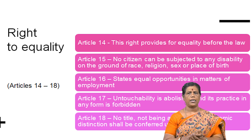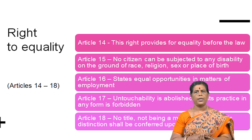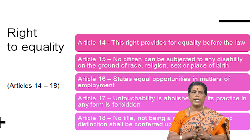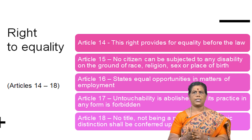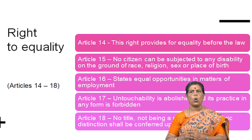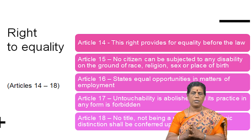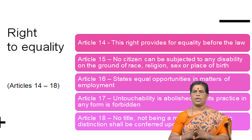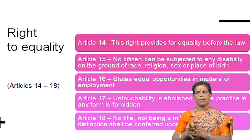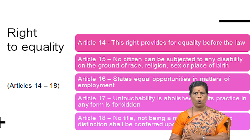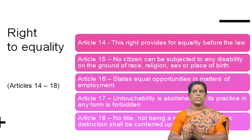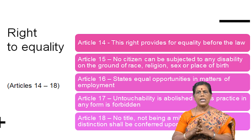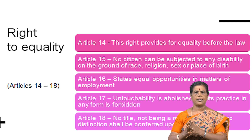The right to equality is guaranteed under Articles 14 to 18 in the Indian Constitution. Article 14 provides the right to equality before the law — we are all equal. Article 15 states that no citizen can be subjected to any disability on the grounds of race, religion, sex, or place of birth. That is, no discrimination on the grounds of race, religion, sex, or place of birth.